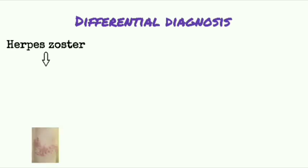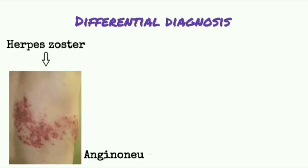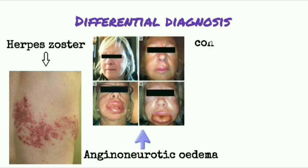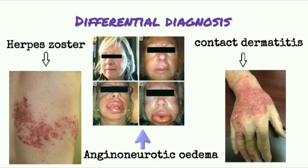Differential diagnoses include herpes zoster, angioneurotic edema, and contact dermatitis.